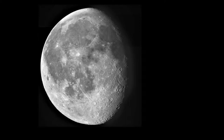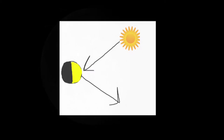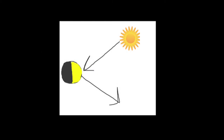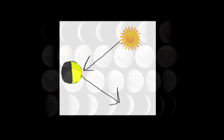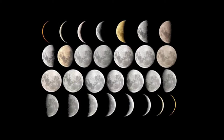Although it is bright in the sky, the moon does not actually create its own light. Instead, the light we see coming from the moon is simply the light of the sun being reflected from its surface. It is because of this reflection and the moon's orbit around the Earth that we see the moon a little differently each night we go outside.